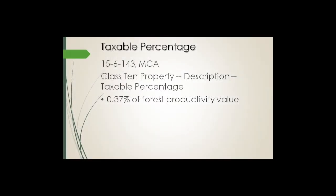MCA 15-6-143 is the law that talks about Class 10 property as a whole. This law gives us a taxable percentage, or in other words a fractional assessment. Forest land value is going to be fairly high, however to get to our taxable value we take that value times 0.37%, or mathematically the value times 0.0037, to get taxable value, and that value is then what we take times our mill levy.